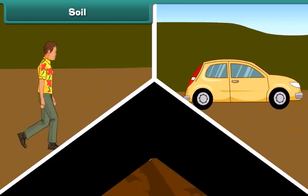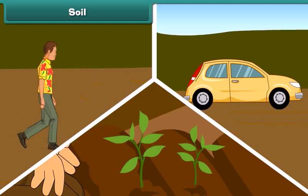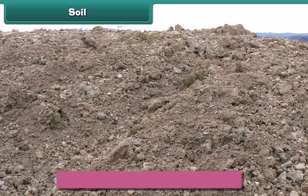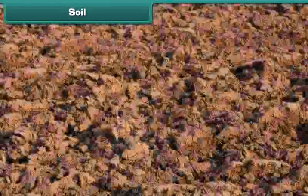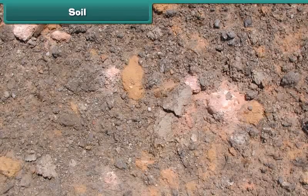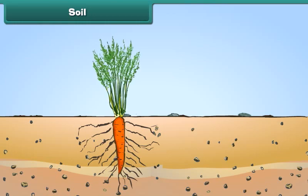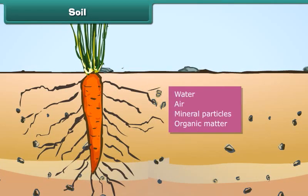It is everywhere — we walk on it, we drive on it, and we grow plants on it. It is soil. Soil is the uppermost layer of the Earth's surface. It consists of a mixture of rock finely ground into powder, water, air, and organic matter.